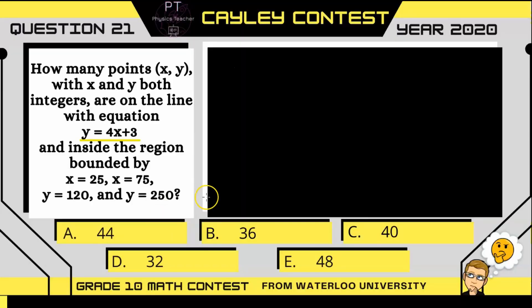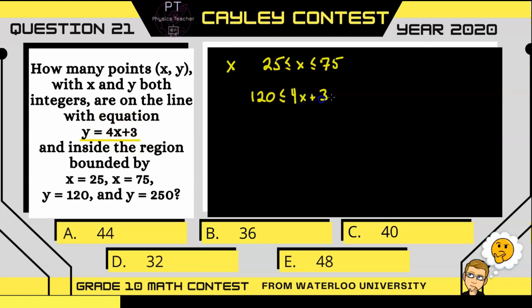All right, so if I'm going to rephrase this question, what we need to do is determine the number of integers x, where 25 is less than or equal to x and less than or equal to 75, for which your y values, 120, is less than or equal to y. But instead I'm going to write what y is equal to according to the equation of the line: 4x plus 3, which is less than or equal to 250.